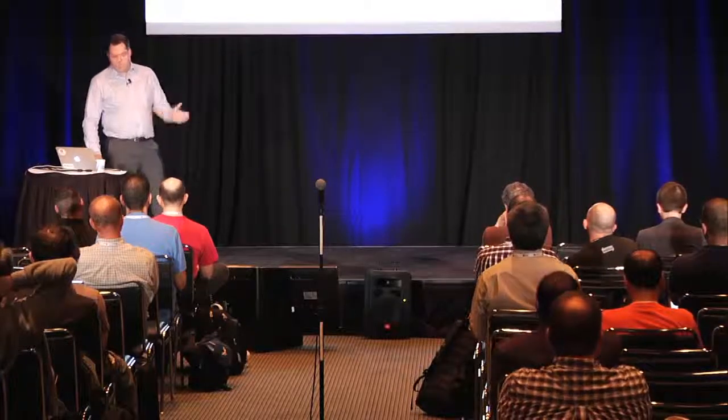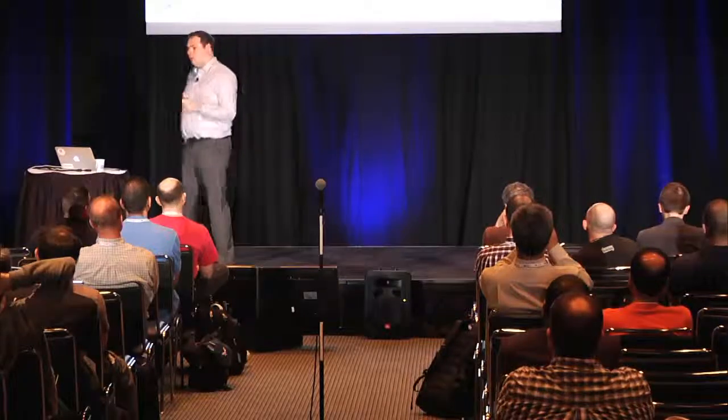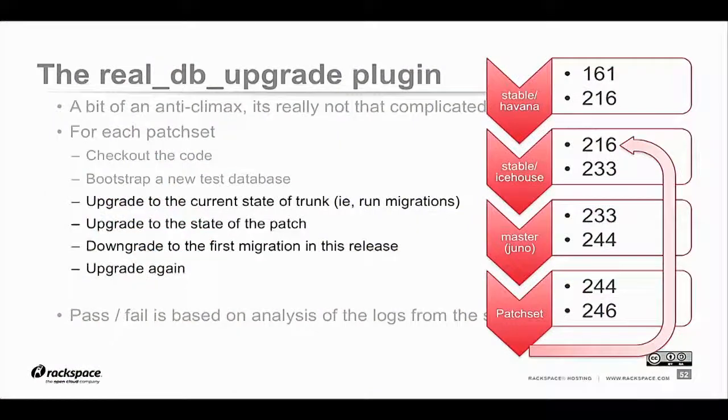Then we upgrade to the current state of the patch, as the patch might also have migrations we want to run. Then we downgrade back to the first version in the last stable release to test the timing of the downgrade, then upgrade again to the bottom of the patch set. Better visualized: whatever version you start at, it goes through each release — Havana, Icehouse, Master which will become Juno, then your patch set. Once done, it goes back to the beginning of Icehouse (version 2.1.6) and back through again with the patch set checked out to test against that.